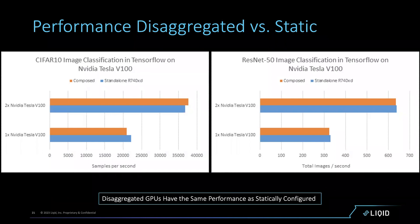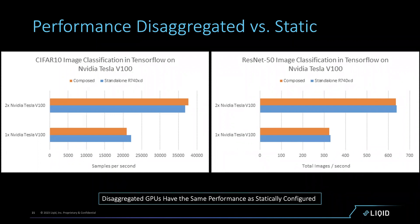This data was taken by one of our OEM partners measuring accelerator performance statically configured inside a server versus disaggregated outside the box. The orange bar is a composed GPU; the blue bar is a static GPU. The key takeaway: the performance is the same. By disaggregating GPUs, there is no measurable performance loss — due to our 100-nanosecond per-hop latency. At the application layer, you cannot detect that the GPUs are disaggregated.